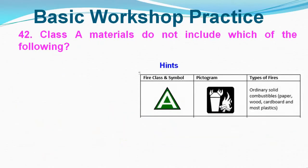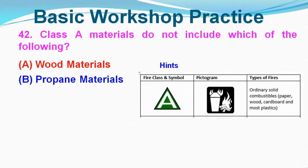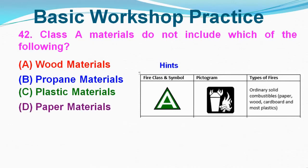Question No. 42: Class A materials do not include which of the following? Option A: Wood materials, Option B: Propane materials, Option C: Plastic materials, Option D: Paper materials. Correct answer is Option B, Propane materials.